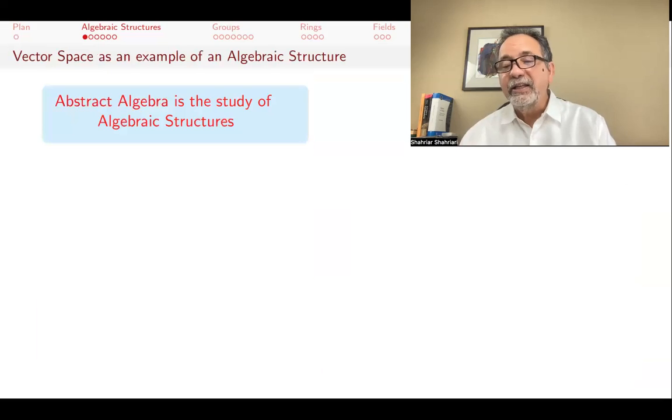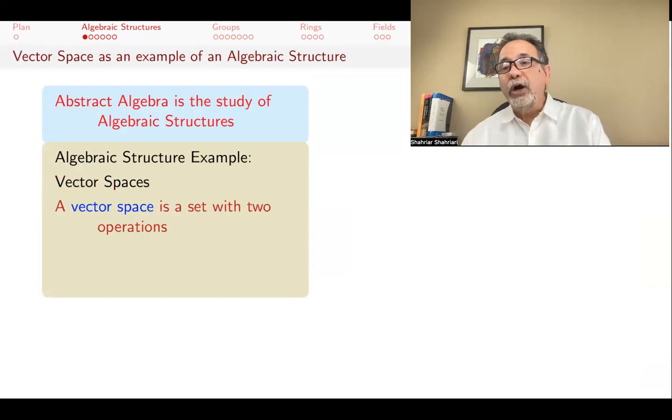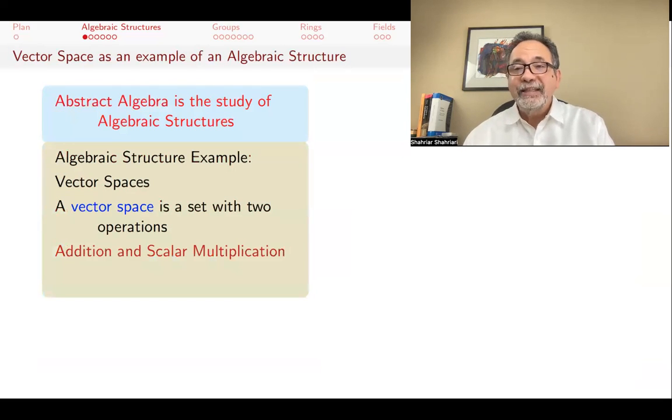Abstract algebra is really the study of algebraic structures. But what is an algebraic structure? An example that you may have seen, if you have studied linear algebra, is vector spaces. A vector space is a set with two operations, an addition and a scalar multiplication. And these operations satisfy certain rules.